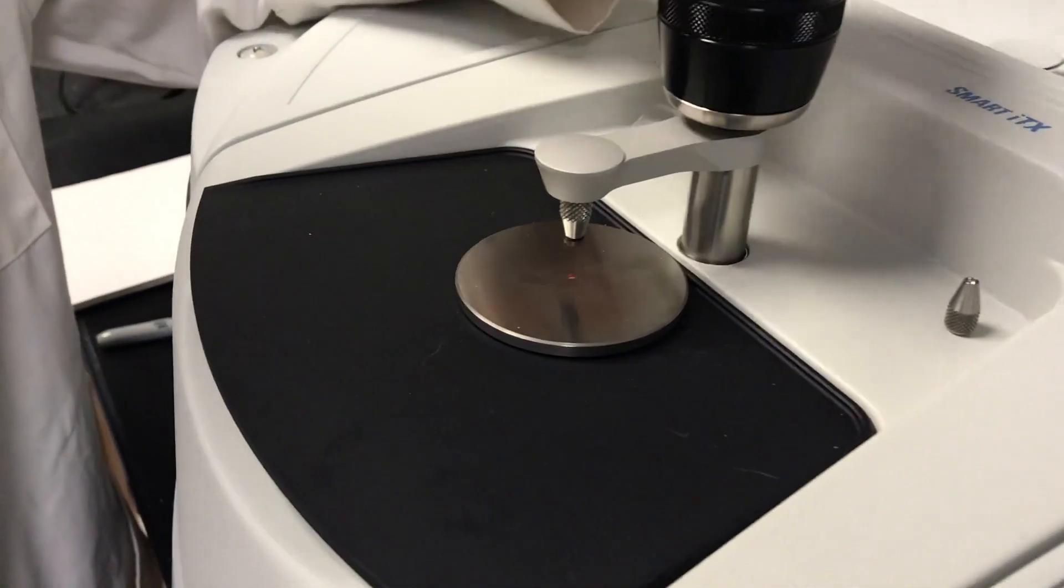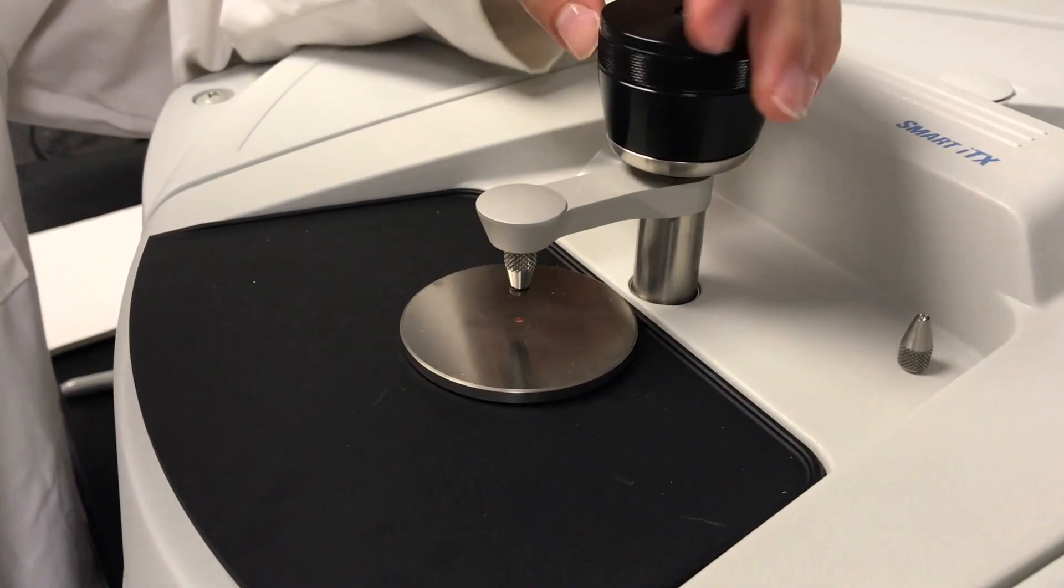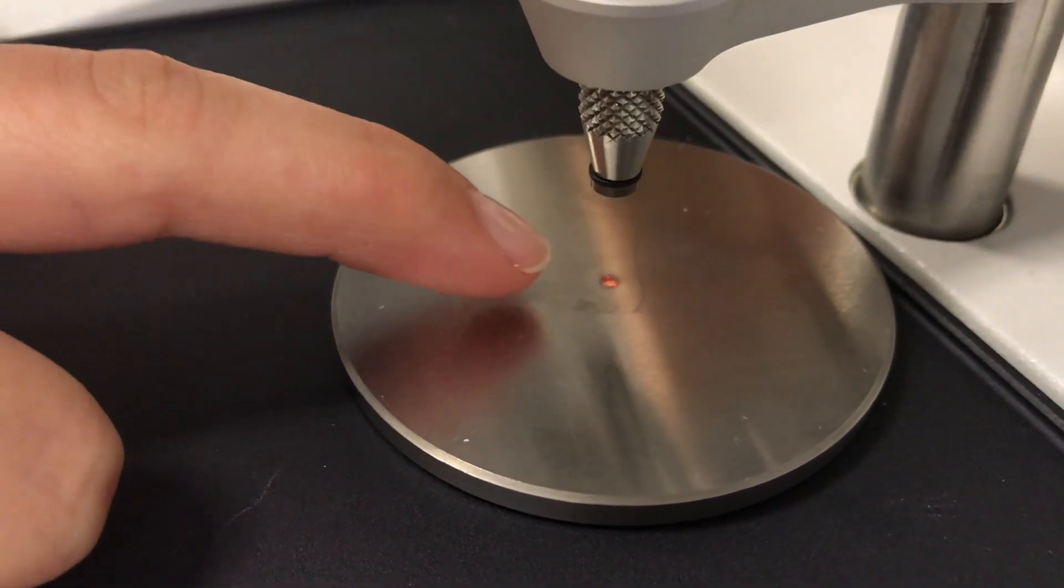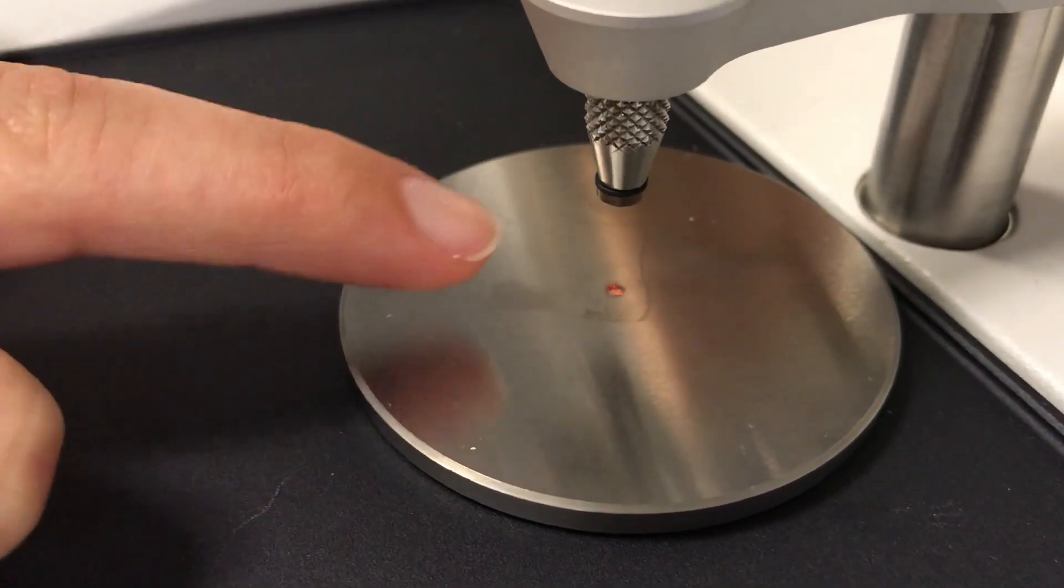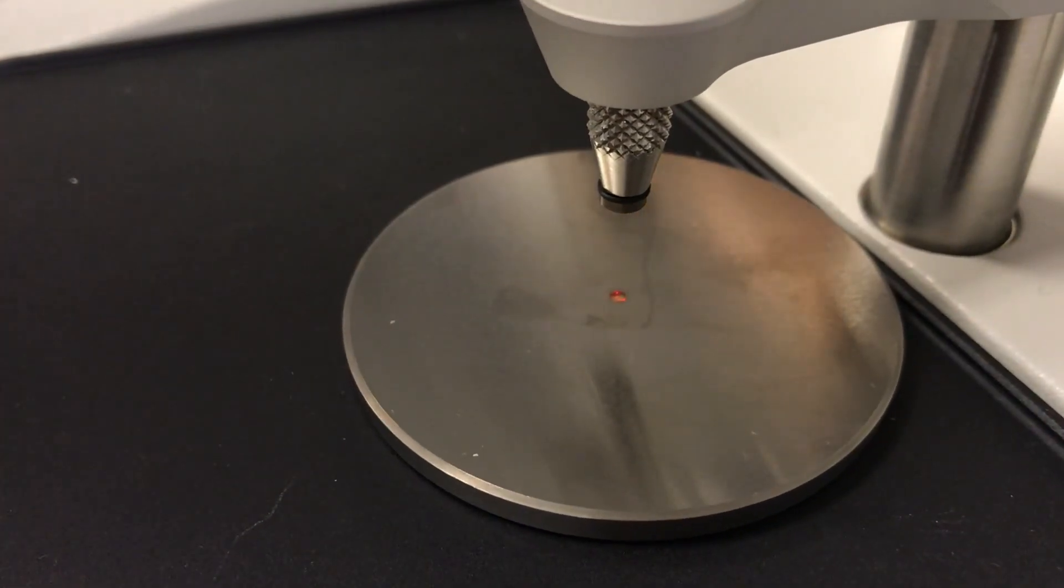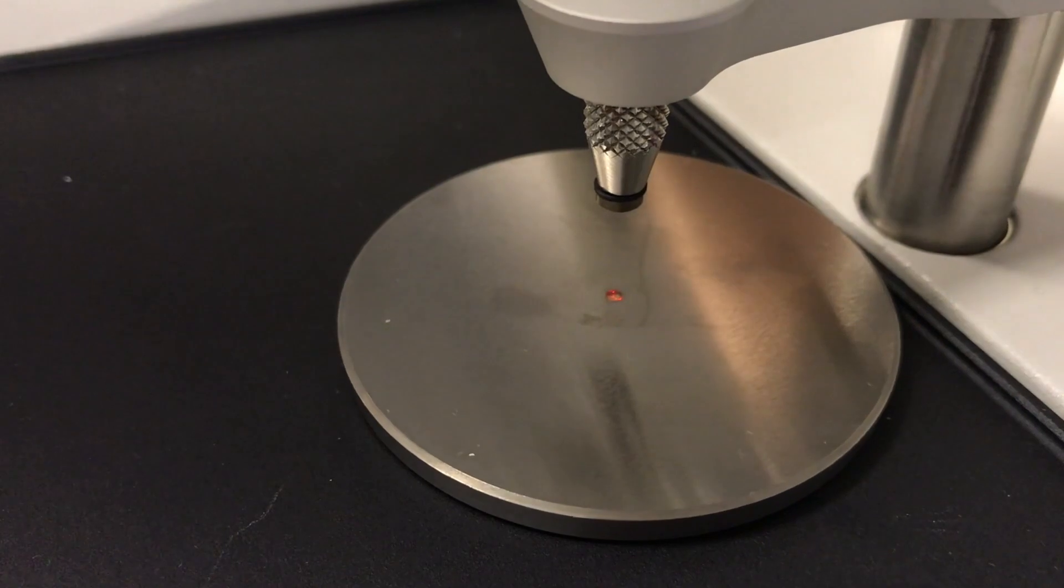To raise or lower the accessories you can turn this knob. Beneath the accessory is the crystal. You can see a red light shining out from it and you just want to make sure that you never touch this especially with the spatula when you're loading your sample onto the plate here.